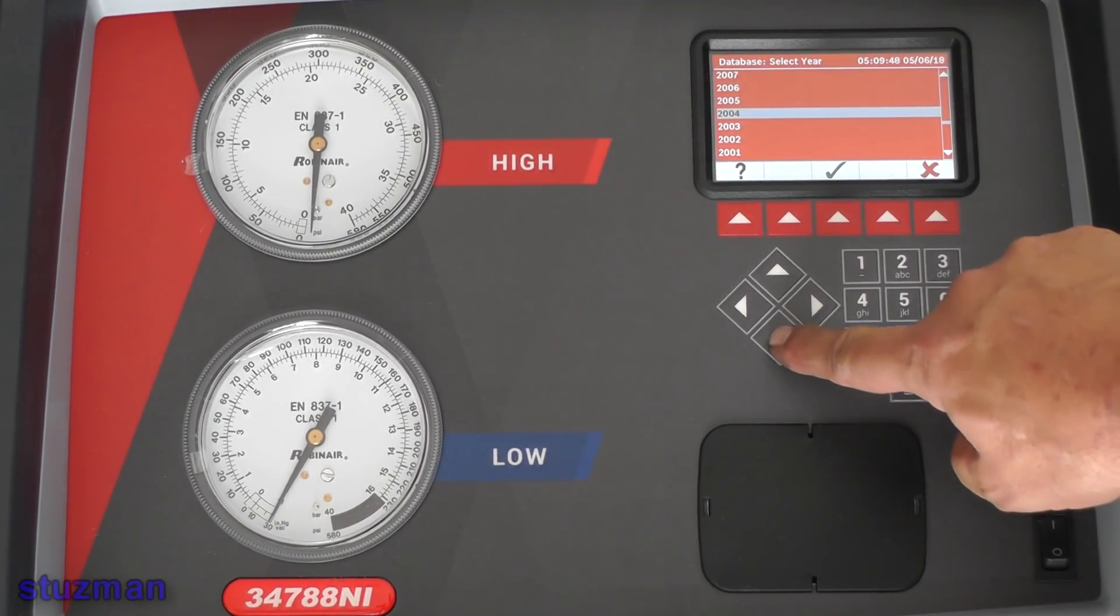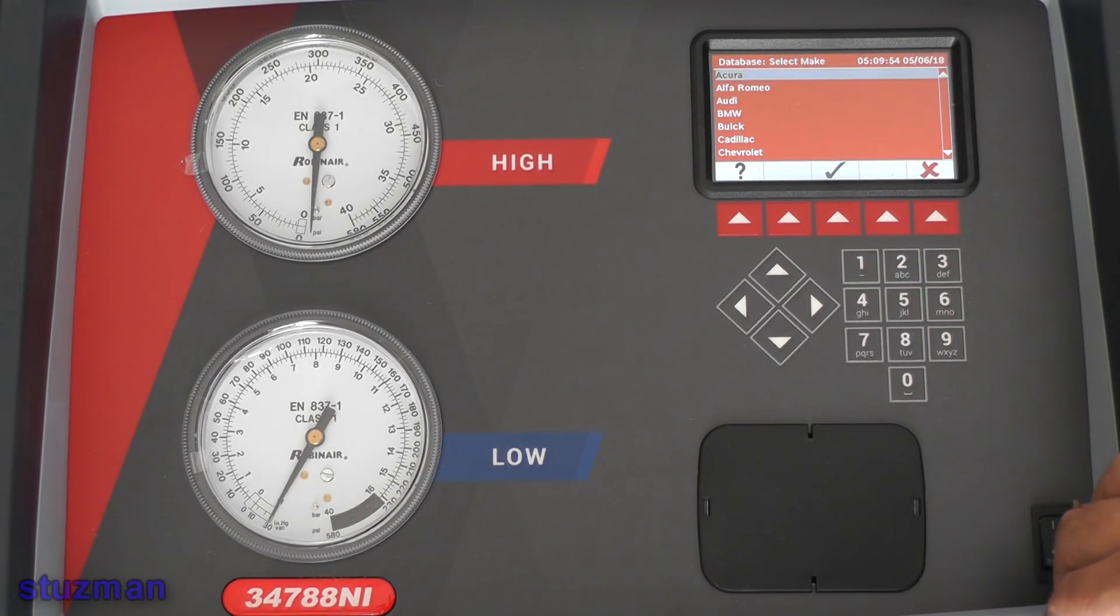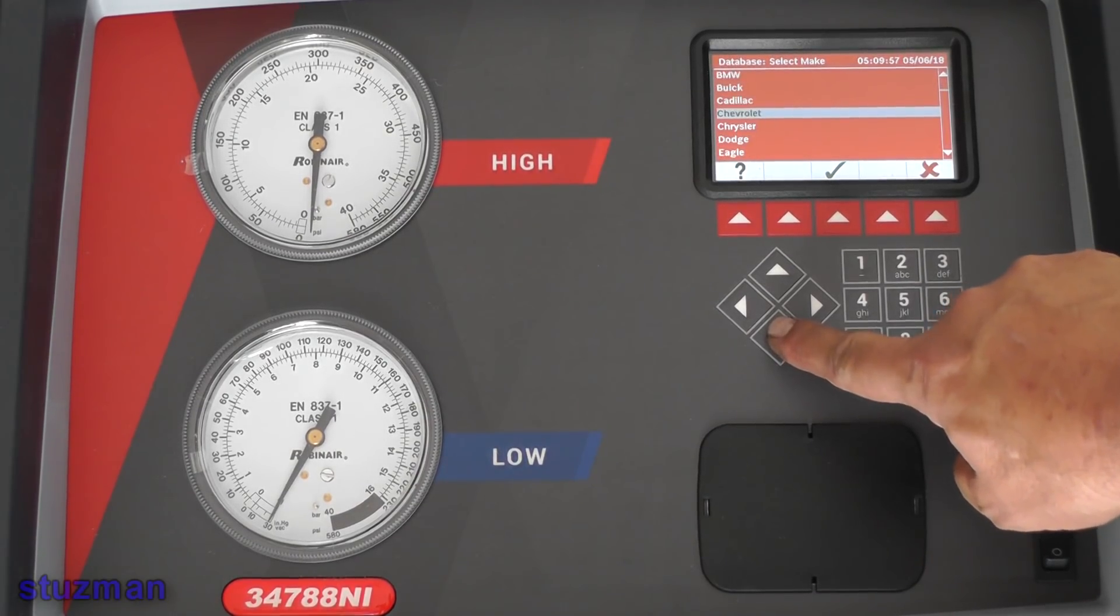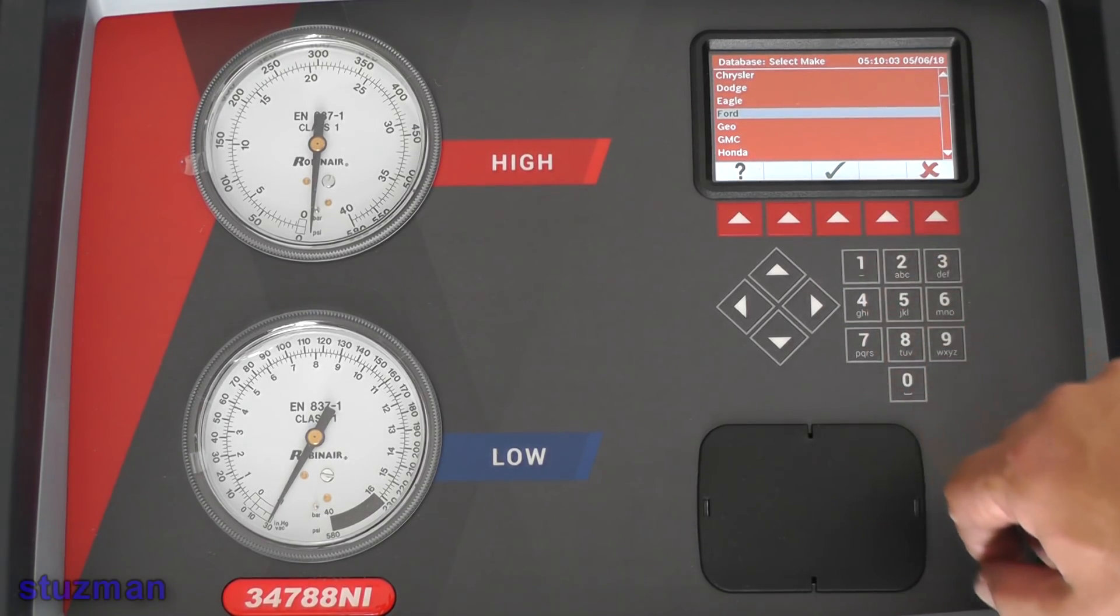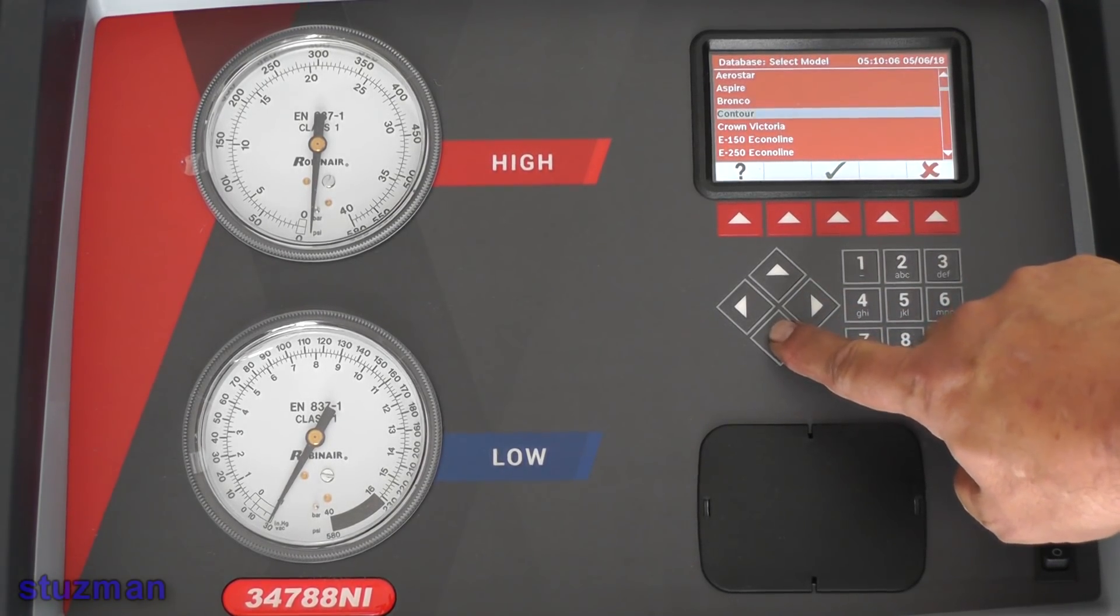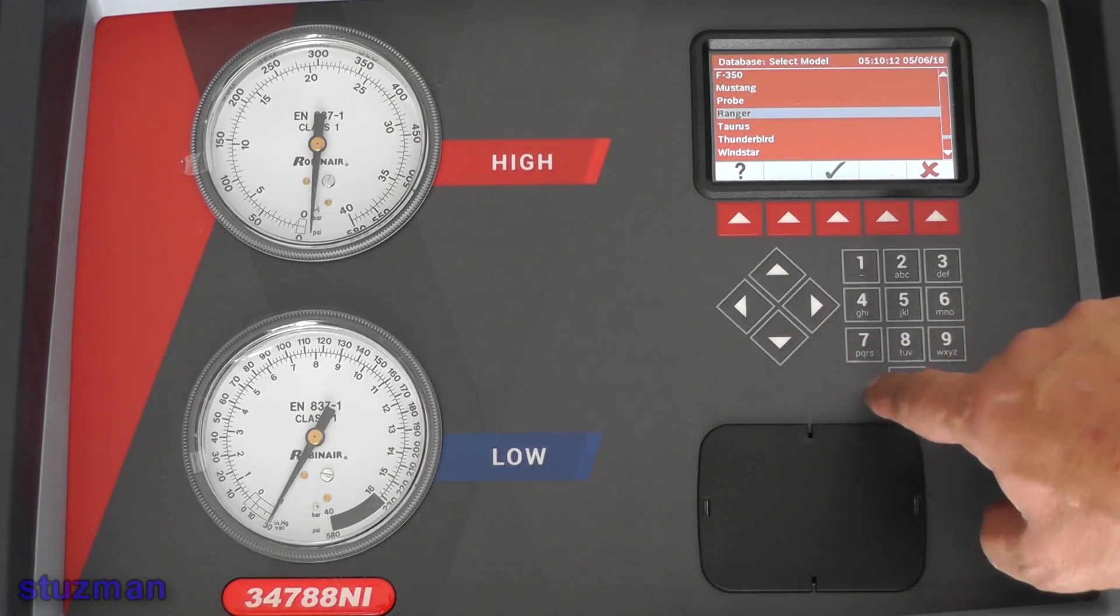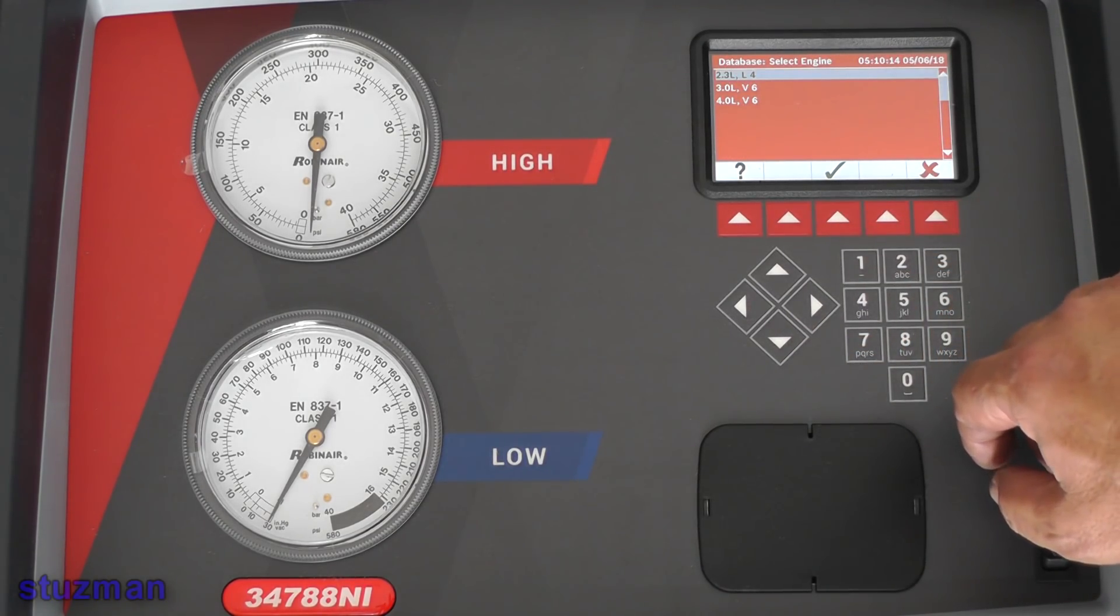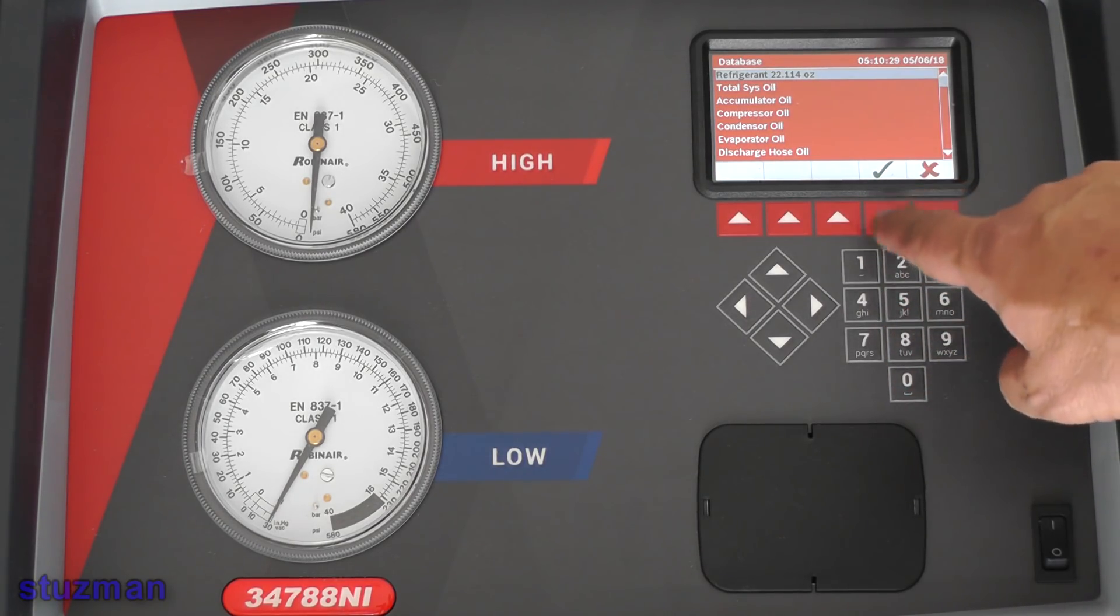Now this will only go up to 1995, but the capacity is still the same for 1994. We're looking for a Ranger 2.3 liter engine. So there is the capacity for the refrigerant, 22.114 ounces, and I've checked that in the service manual. That is correct.